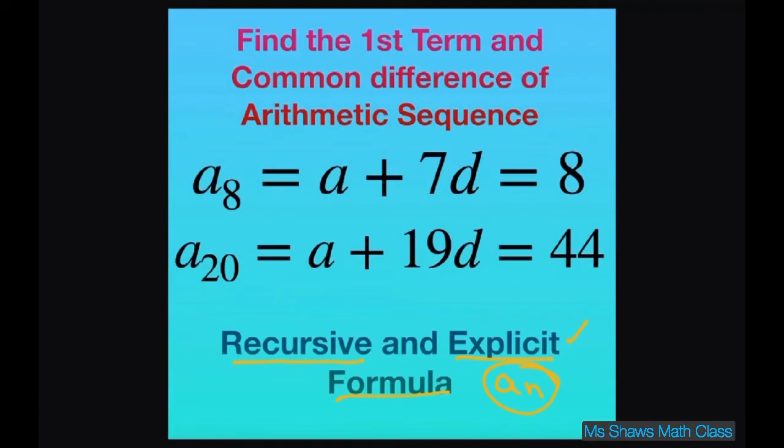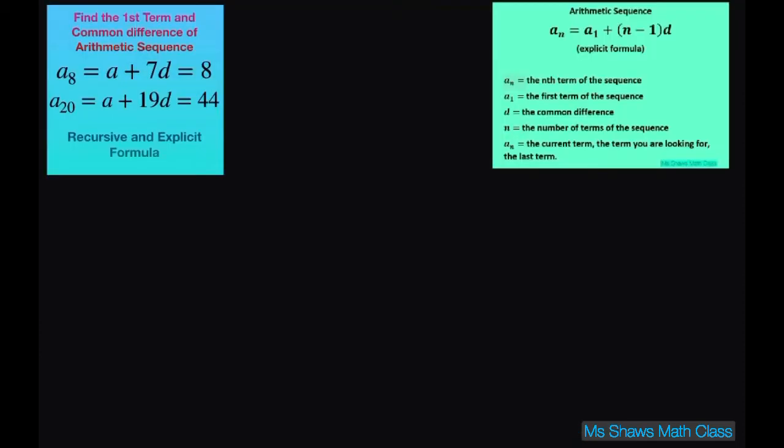Alright, so basically what this problem wants is they're saying the 8th term is 8 and the 20th term is 44. So I set it up for you already, but the question is asking you if a sub 8 equals 8 and a sub 20 equals 44, then find the first term and the common difference and then write our recursive formula and our explicit formula.